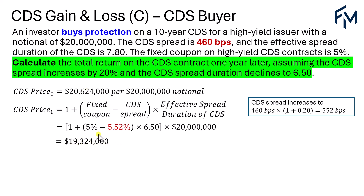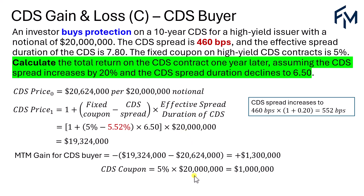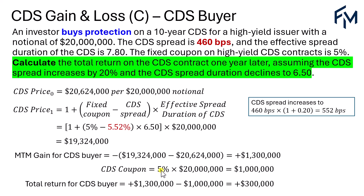The price has dropped over that one year — a gain for the short position, which is the investor. The mark-to-market gain for the CDS buyer would be the difference in price with a negative sign for the short position, giving an overall mark-to-market gain of $1.3 million. Because the question asks for total return, we also consider the CDS coupon: 5% fixed coupon times $20 million notional equals $1 million. The CDS buyer pays this premium, so the overall return is the $1.3 million gain minus the $1 million premium, giving a $300,000 total return.